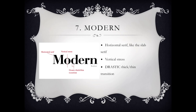Last but not least, we have the modern font. It has horizontal serifs like the slab serif, but it has a drastic thick-thin transition and vertical stresses. Like in that O, it has a drastic thick-thin transition — at the top you have thin, then it goes into thick and thin.